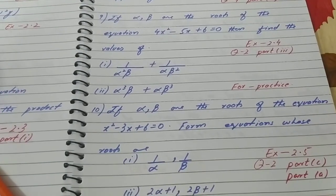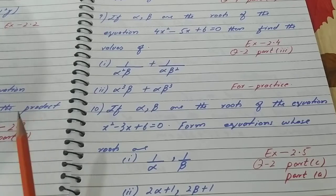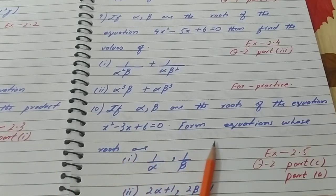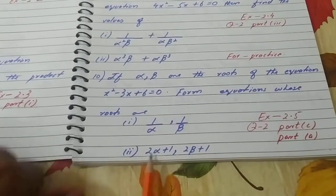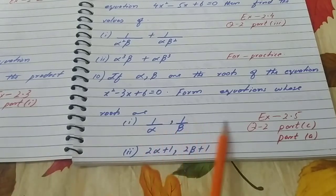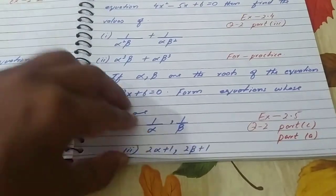Question number 10: If α and β are the roots of x² - 3x + 6 = 0, form the equation whose roots are 1/α, 1/β and also (α + 1/α)(β + 1/β). This is from Exercise 2.5, parts (a) and (c) of question 2.